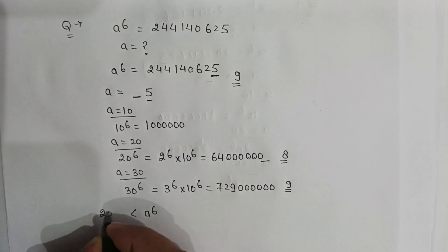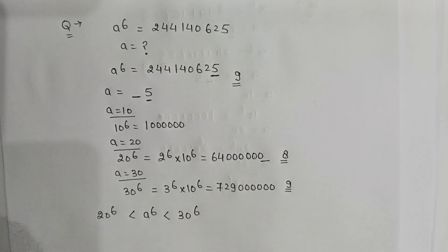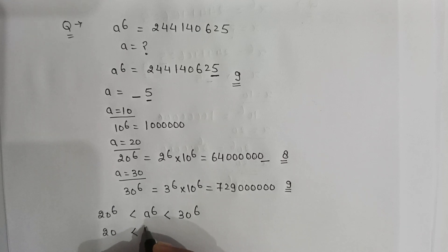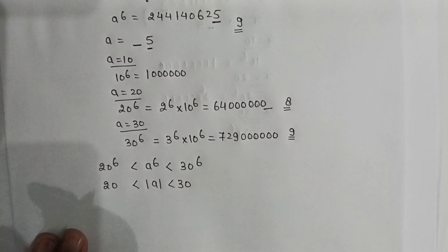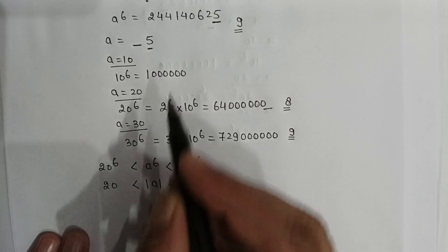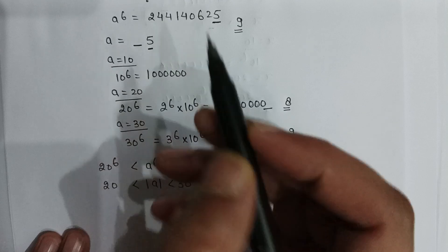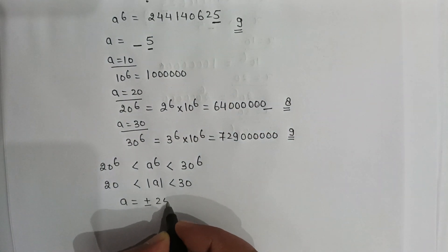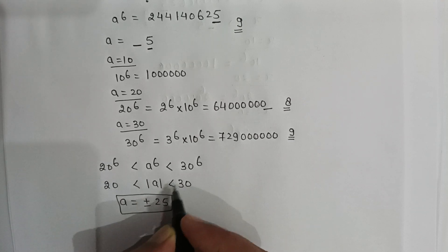We can clearly see that a to the power 6 will lie between 20 to the power 6 and 30 to the power 6. So the magnitude of a will lie between 20 and 30. Since the last digit of a will be 5, we can clearly comment that a is equal to plus or minus 25.